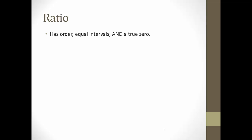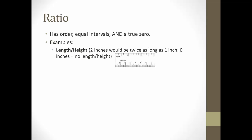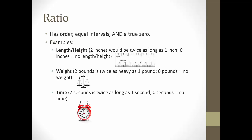Finally, we have the ratio scale. Ratio has order, equal intervals, and finally a true zero. Here's some examples. Length and height. Now, two inches would be twice as long as one inch, and zero inches is the absence of length or height. It means no length or height. Weight is another example. Two pounds is twice as heavy as one pound, and zero pounds is no weight. It's the absence of weight. Finally, time. Two seconds is twice as long as one second, and zero seconds is no time.